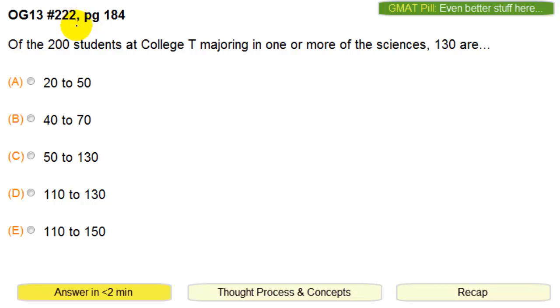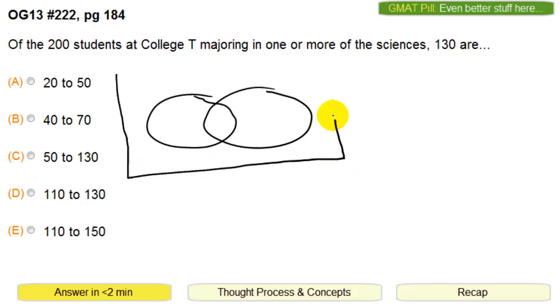Number 222. Of the 200 students at College T majoring in one or more of the sciences, 130 of them are in Chem. So we basically have a Venn diagram where you have the total amount inside this square. Let's say this is the Chem box and this is the Bio box. So 130 of them are in Chem and then in Bio, 150.